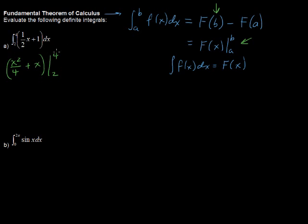evaluated at the upper number first. So, this equals 4 squared over 4, plus 4, minus 2 squared over 4, plus 2. And simplifying that, we have 16 over 4 is 4, 4 plus 4 is 8, so I've got the 8, minus 4 over 4 is 1, plus 2 is 3. So, 8 minus 3 equals 5.